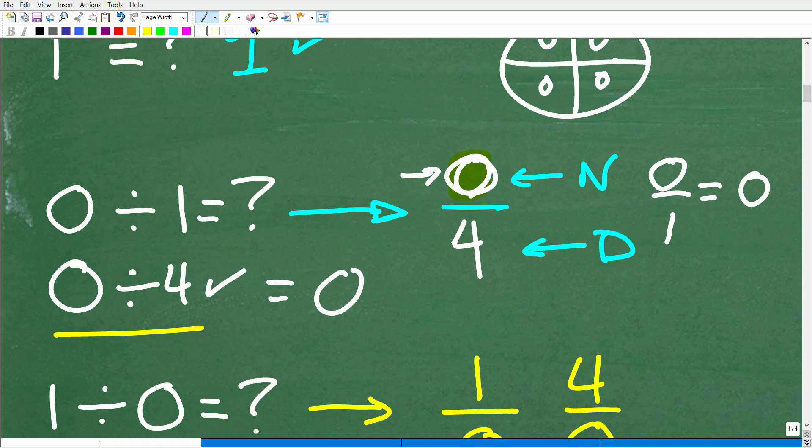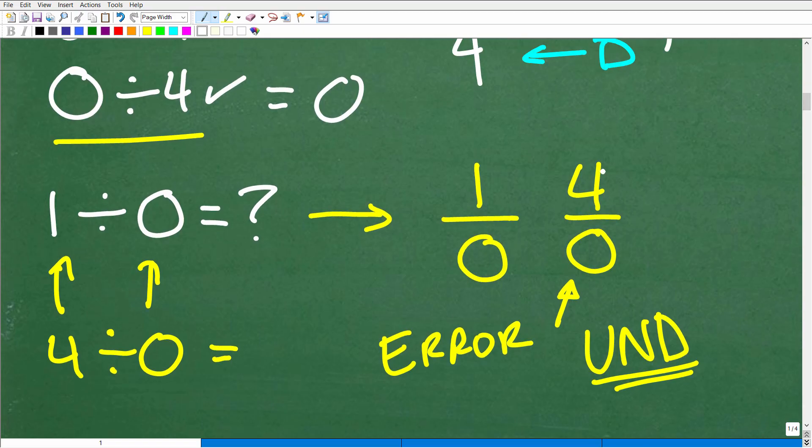Where this other question, I think it's a little bit more conceptual, right? We have nothing, and we'll split it up four different ways. Yeah, then we all get four equal parts of nothing, which, of course, is zero. But we can't take something and split it up with nothing, okay?